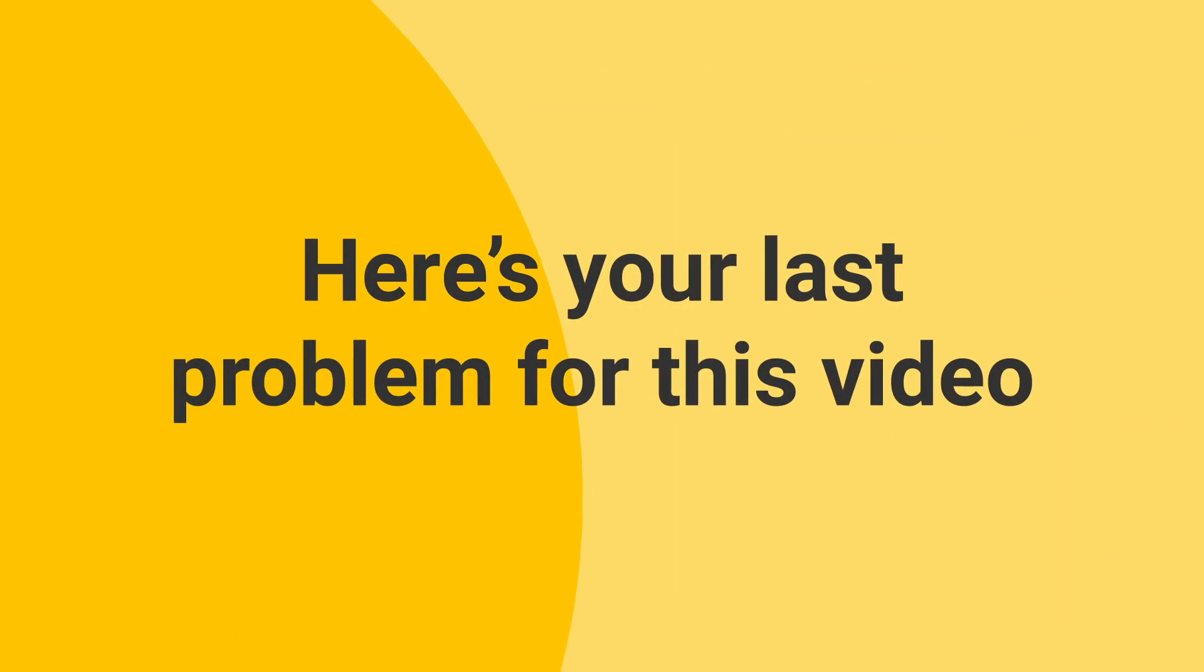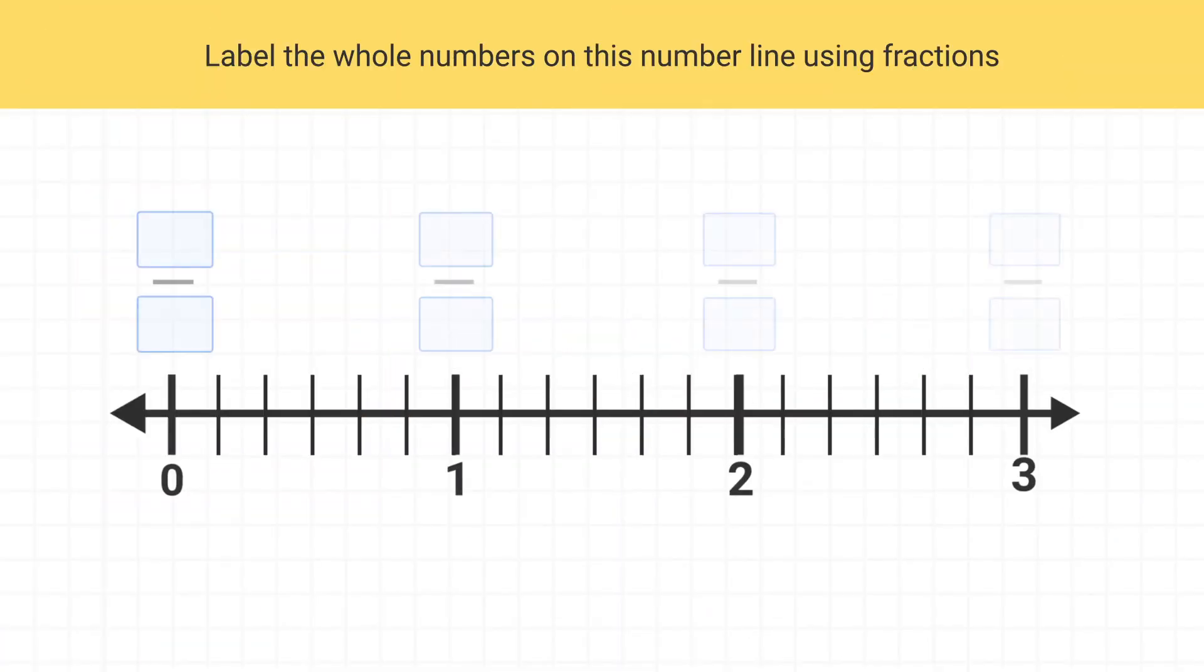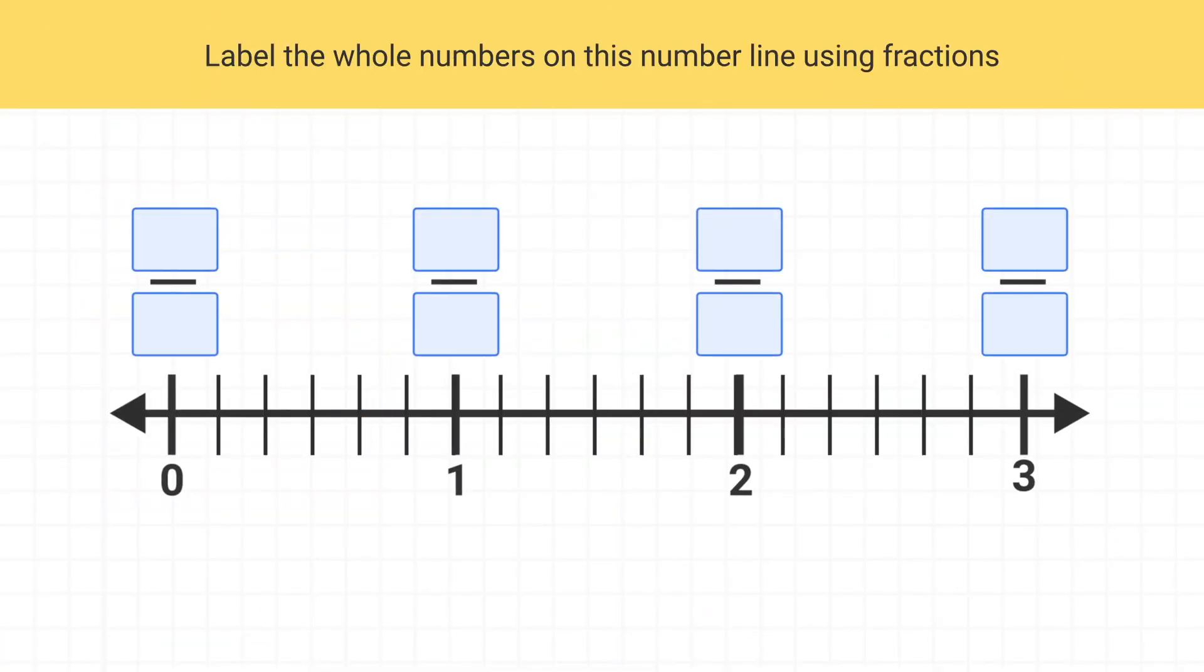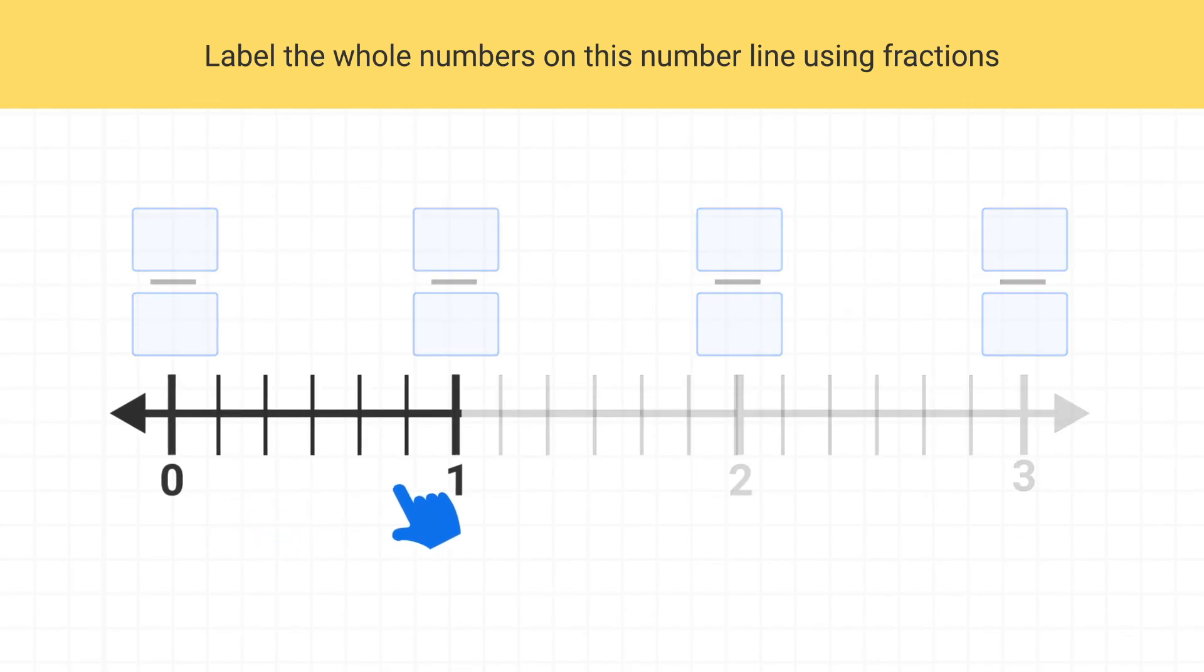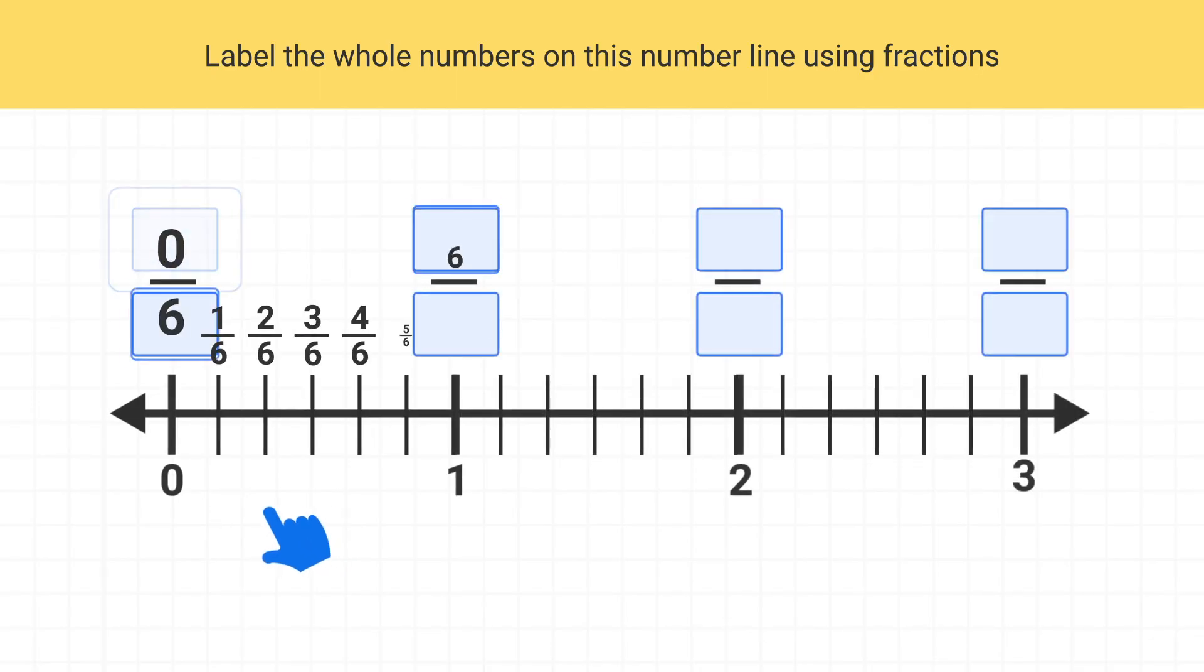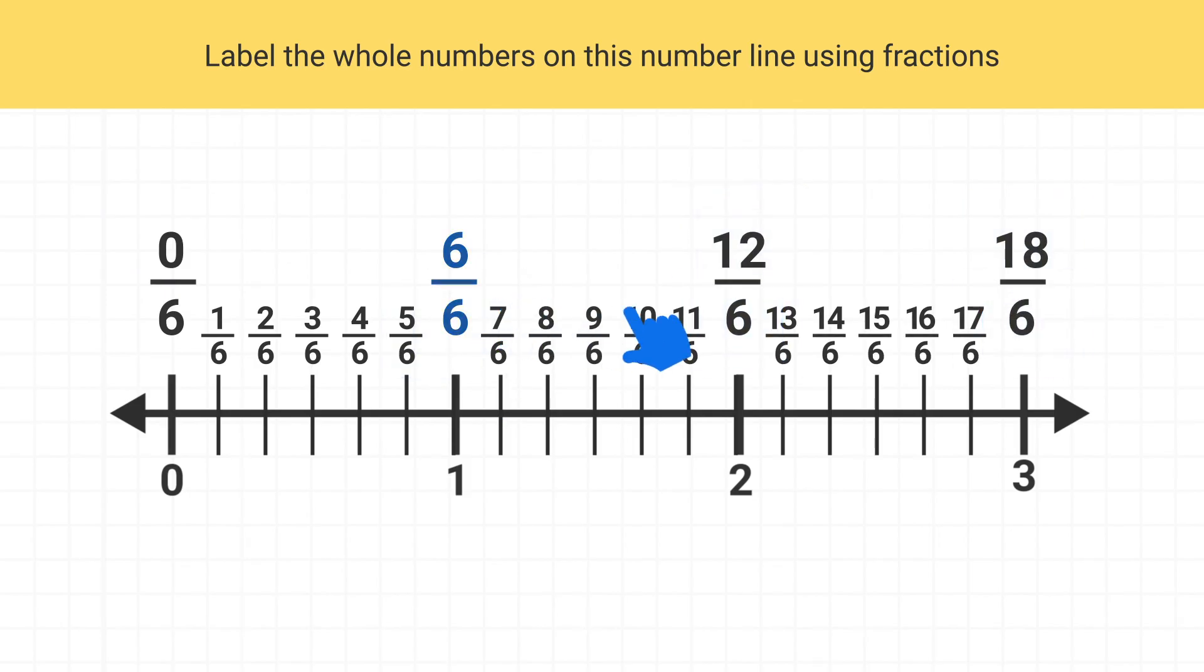Now here's your last problem for this video. Label the whole numbers on this number line using fractions. You can see each whole number has been split up into 6 pieces, so these dashes are sixths. Knowing this, we can start labeling and get that 1 whole is 6 sixths, 2 wholes is 12 sixths, and 3 wholes is 18 sixths.